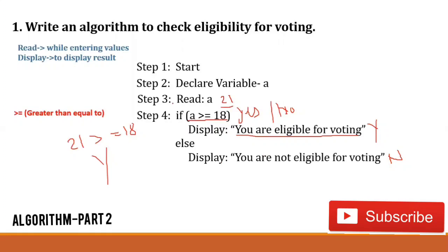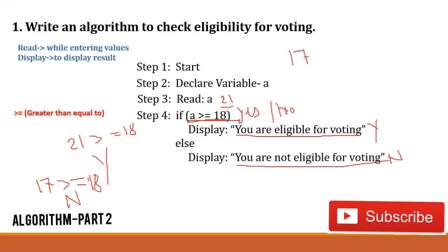Now let's check another age. Consider I entered 17 in variable a. I want to check whether the candidate with age 17 is eligible for voting or not. 17 is greater than 18 — no. 17 is equal to 18 — no. This time the answer is no, which means the display after else is printed: 'You are not eligible for voting.' So in this way we can check eligibility for voting. The last step is stop.